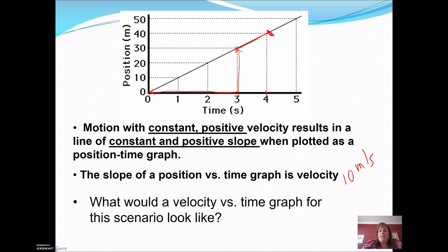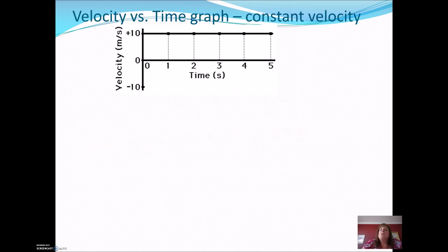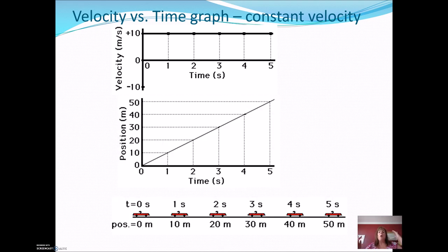What would the velocity versus time graph for this scenario look like? Because we have a constant positive slope on our position versus time graph, and the slope of a position versus time graph is velocity, your velocity graph should be a flat line at 10 meters per second — constant. When I have a motion diagram with equally spaced intervals moving in the positive direction, the velocity versus time graph will be a flat horizontal line.